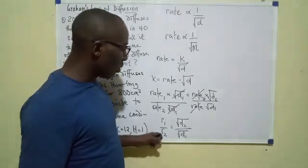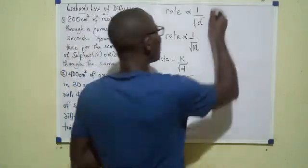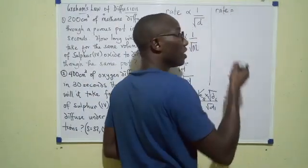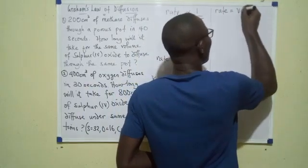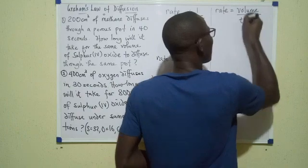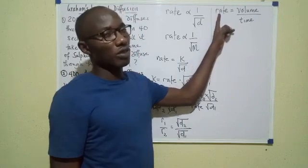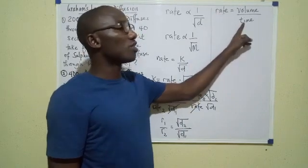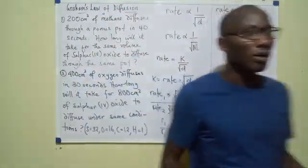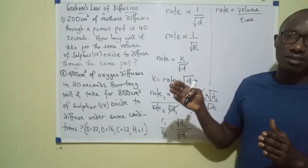Now looking at this formula, I could expand it a little bit. For example, the rate of diffusion of a gas is said to be the volume of gas that diffuses divided by the time taken for it to diffuse, which means the rate of diffusion of a gas is inversely proportional to the time it takes.